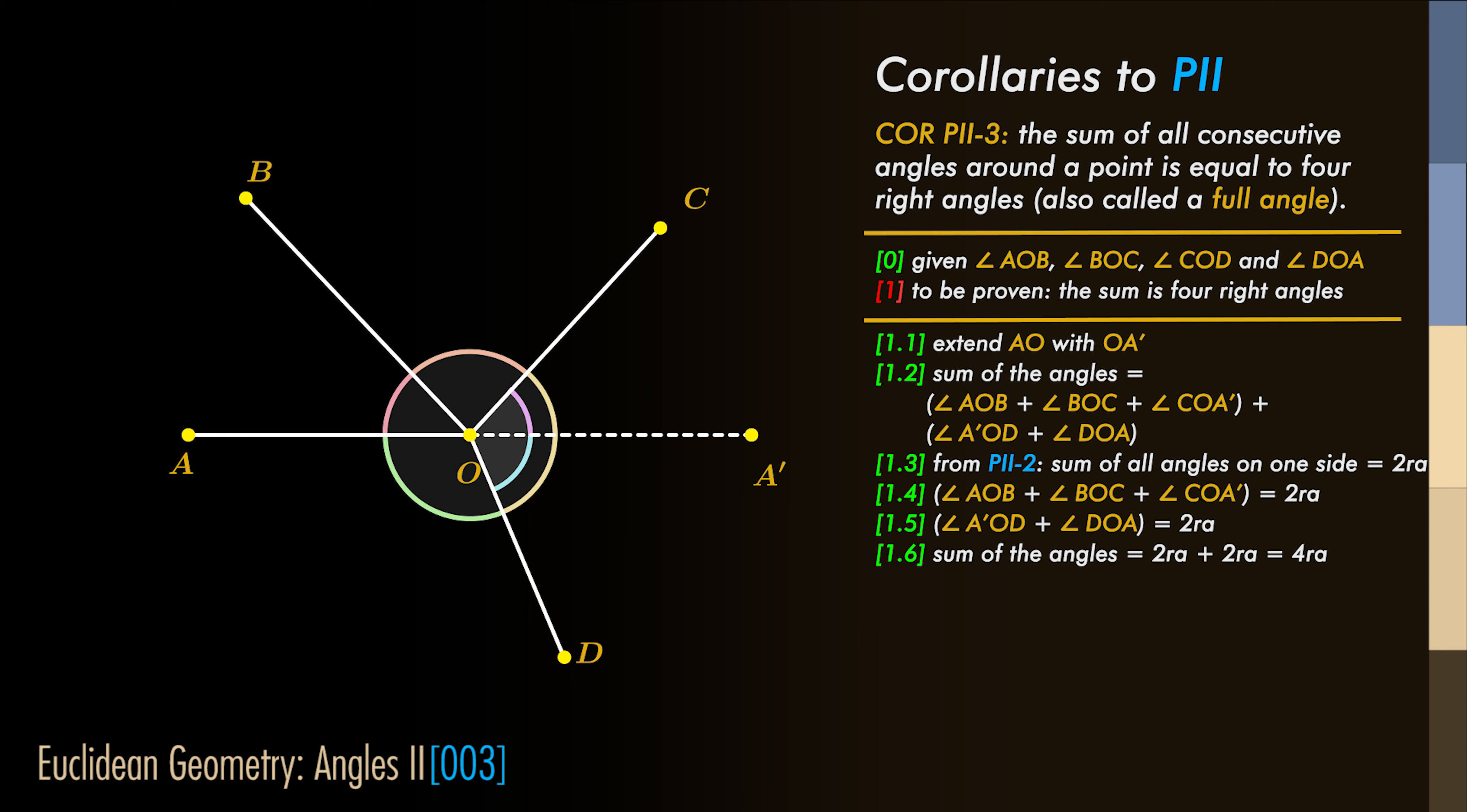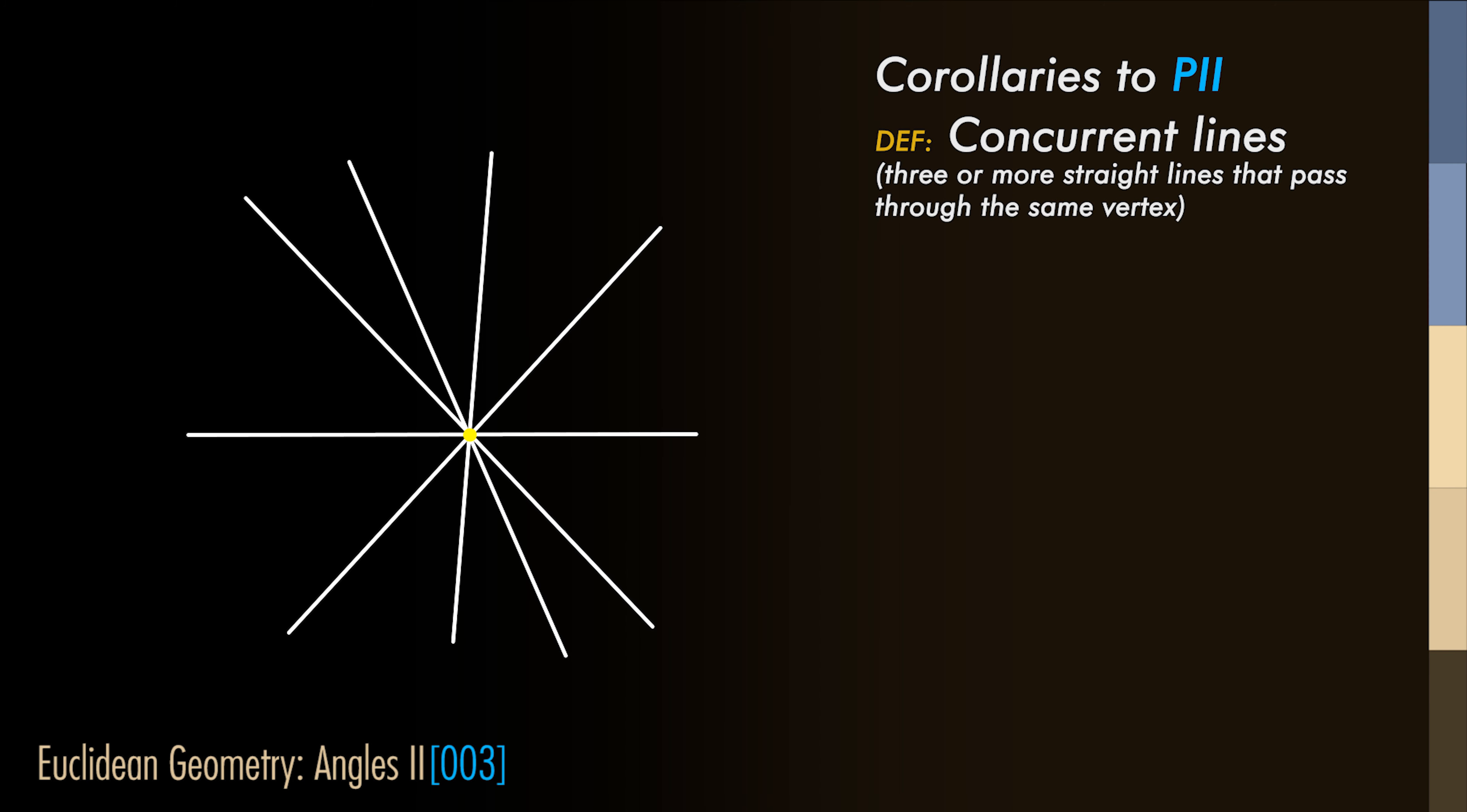We have done this for four angles around a vertex. We can do this for any number of angles around a vertex. When three or more straight lines pass through the same vertex, they are called concurrent lines.